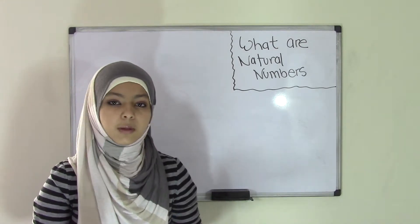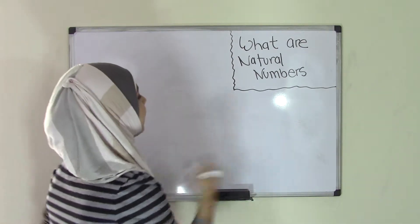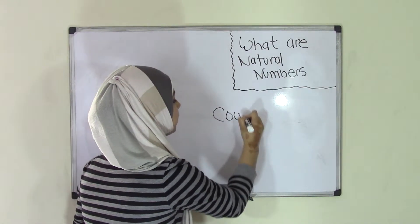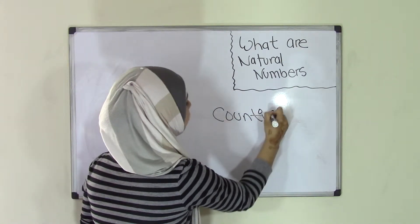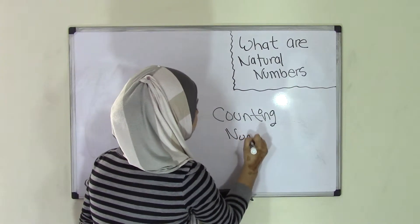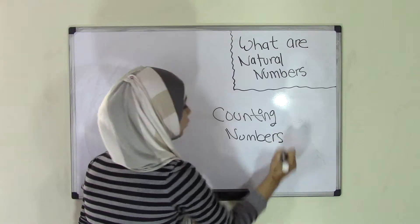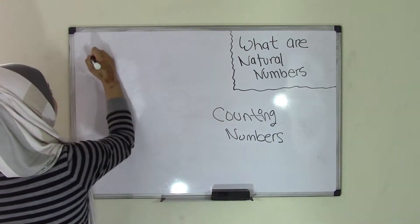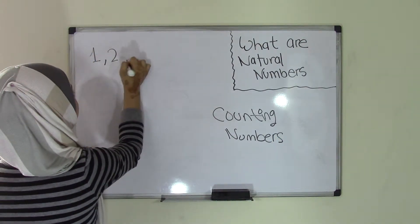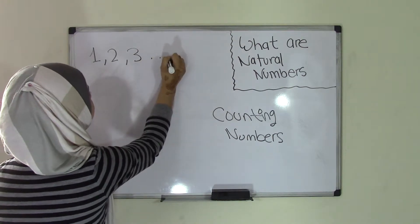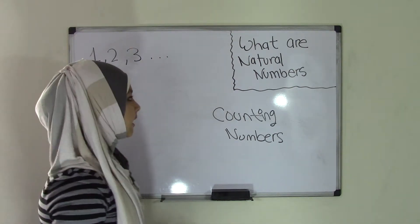Now a very easy way to remember natural numbers is by counting. So I'm going to write counting or counting numbers. So when we're counting, we start from 1, 2, 3, and we keep on going, right? Because remember, numbers aren't finite. They don't have an ending point.